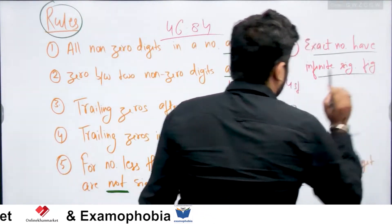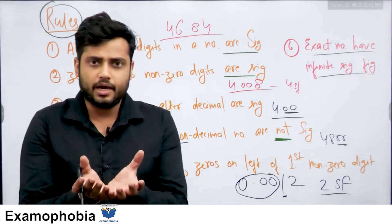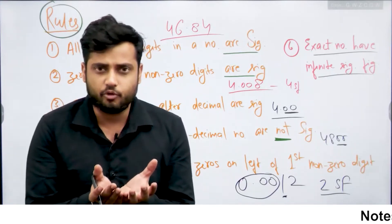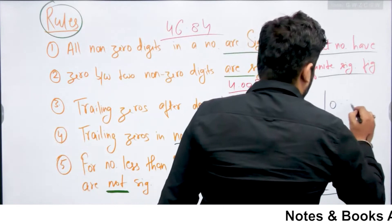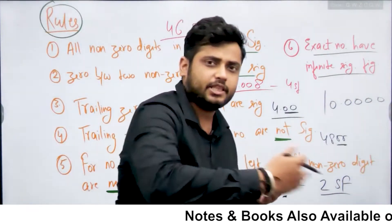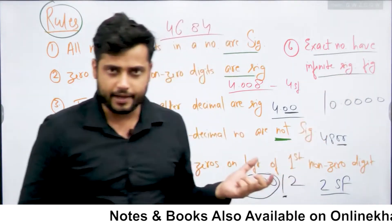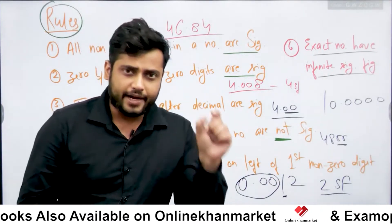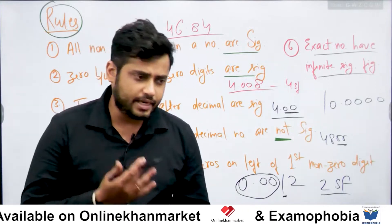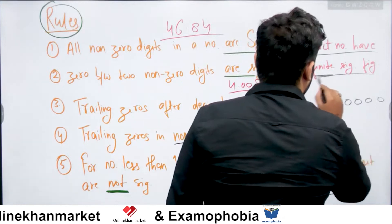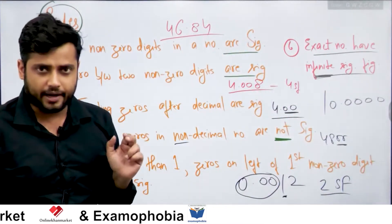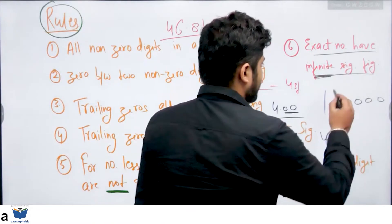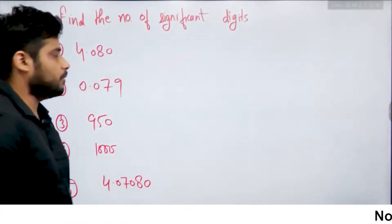Phir ek rule yeh hai, that exact numbers have infinite number of significant figures. Agar mere paas ek tokra hai aur us tokri ke andar 10 saib pade hue hain, to hum bolenge 10 — exact number hai woh. Toh uske andar agar aap 10.000000 likh rahe ho, ya sirf 10 likh rahe ho, woh hamesha ek exact value ko correspond kar raha hai. Toh physical quantities, agar hum physical quantities ko measure nahi kar rahe hain — jaise ki hum baat kar rahe hain that radius is equal to d by 2, diameter by 2, so this is an exact value — exact values ke andar hamesha hi infinite significant figures hongi, woh kisi scale ke corresponding hum baat nahi kar rahe hain.